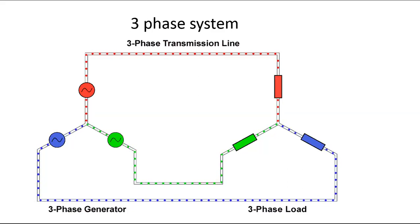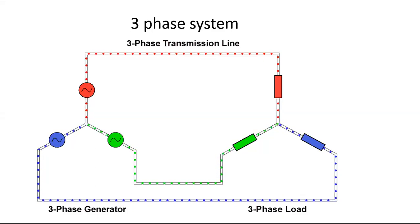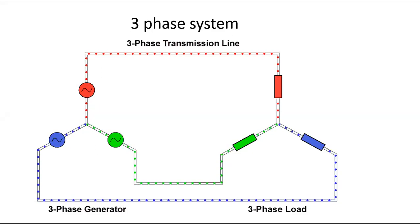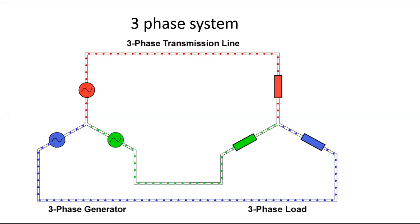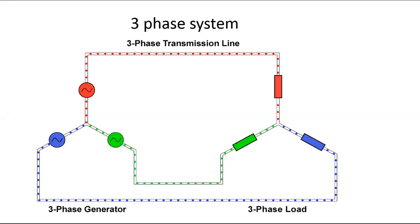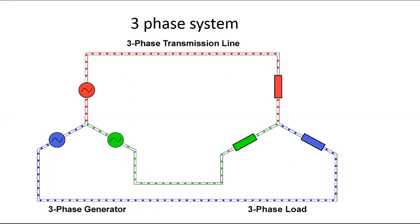Three-phase system provides 15 times more current than single-phase, meaning 15 times greater energy generated. As for why we don't use two-phase or four-phase: research was done on four-phase but its efficiency is very less compared to three-phase. That is why for domestic applications we use single-phase, and for industrial use three-phase. For extremely high mechanical loads such as constructing a flyover with huge cranes, we go for the six-phase system.